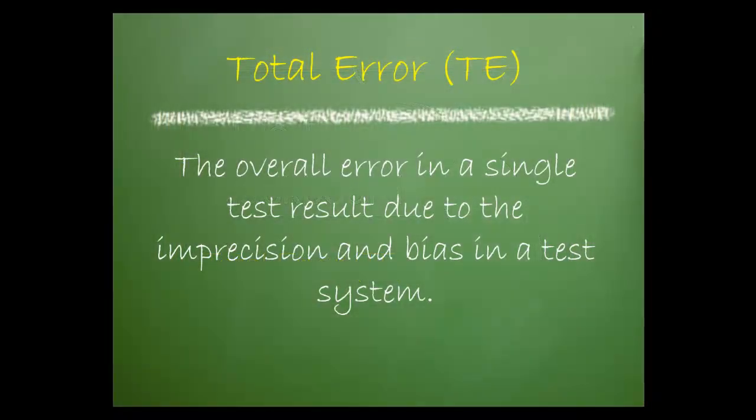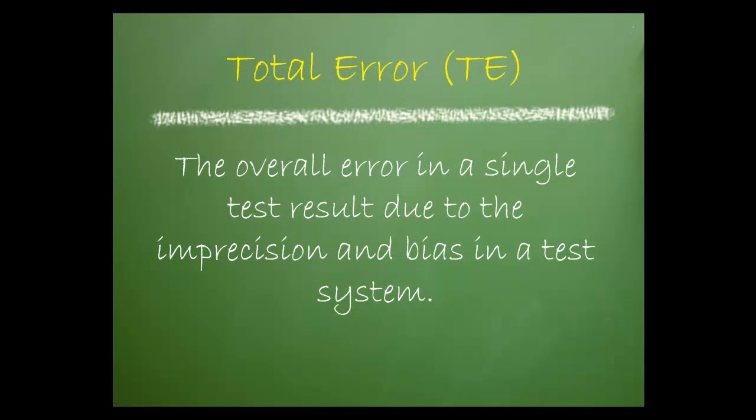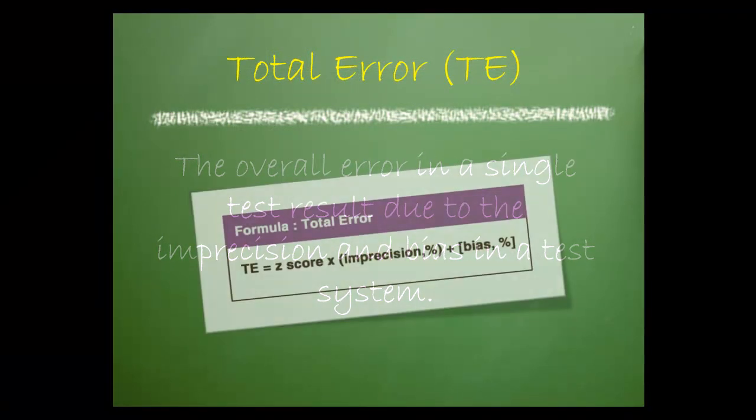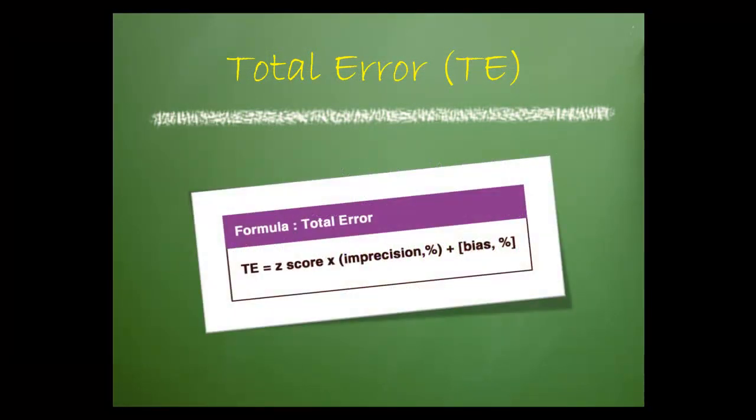Total error is the overall error in a single test result due to the imprecision and bias in a test system. The total error formula consists of three components,